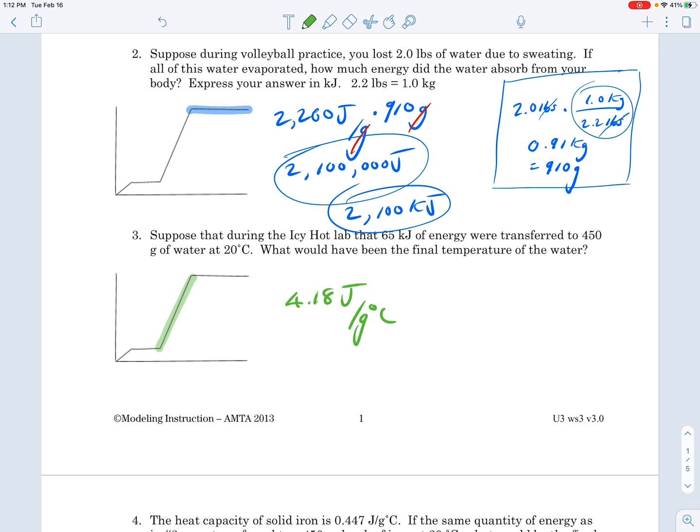They gave us the joules of energy. We're going to set the problem up in the same way, but our unknown is going to be different. We've got 4.18 joules over grams degrees Celsius. We're going to multiply that by 450 grams. The next thing is our change in temperature - I'm going to represent that as delta T. We don't know what it is. They told us the energy was 65 kilojoules, which is 65,000 joules. We don't want to work in kilojoules, we need to work in joules. So I'm going to solve for delta T.